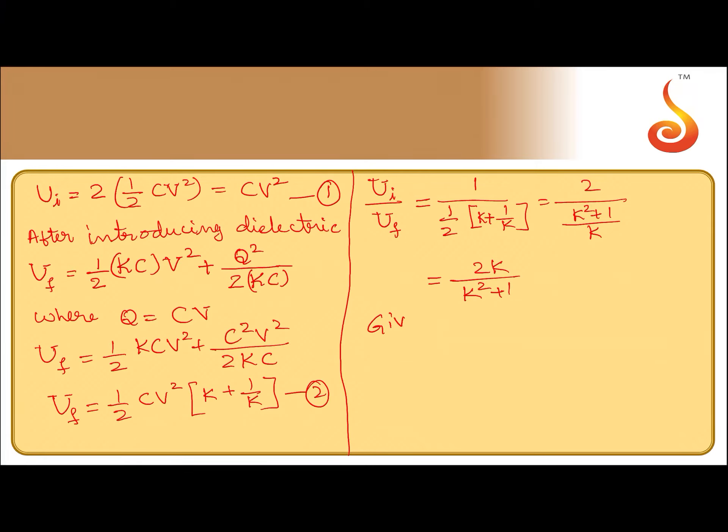Here they have given dielectric constant of the material K is equal to 3. You will get U_i by U_f is equal to 2 into 3 divided by 3 square plus 1. 2 into 3 is 6 divided by 9 plus 1 is 10, that should be equal to 0.6. Ratio of initial energy to final energy is 0.6.